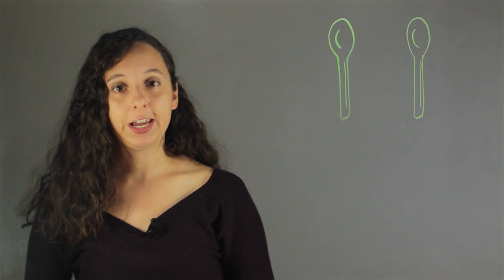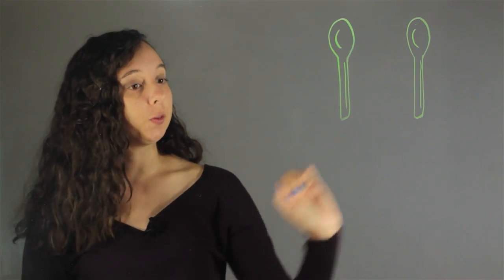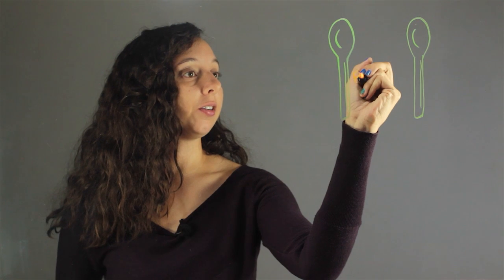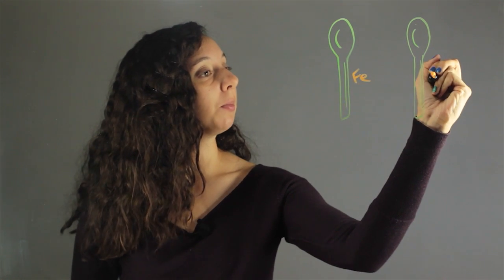As an example, let's take a look at two iron spoons. These spoons are both made of iron, or Fe, chemical symbol.